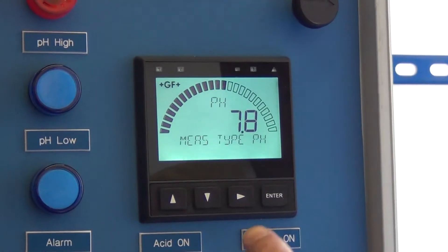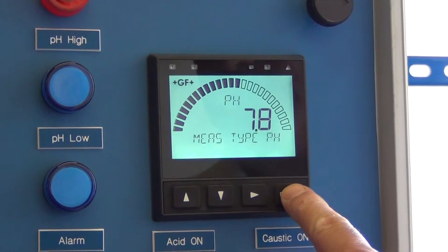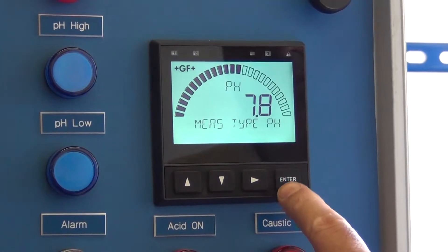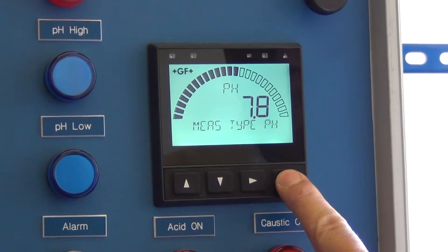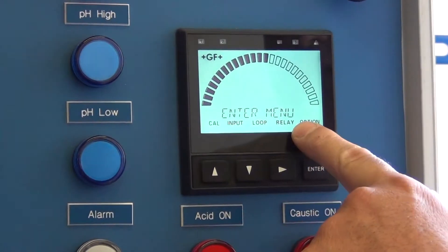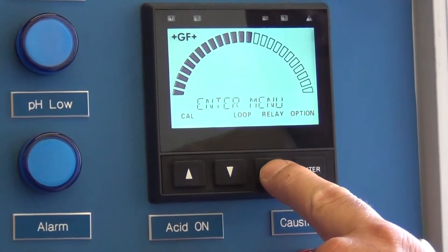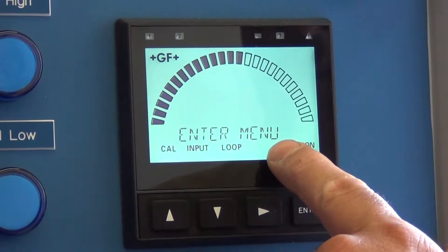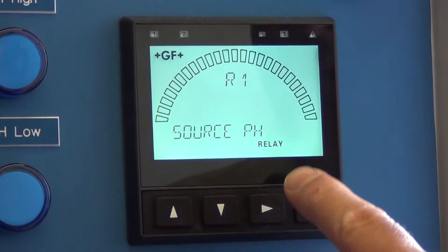Change the pH that your acid pump will dose at. If you're at the main screen, press and hold enter for a couple of seconds. We need to get to the relay menu. Go to relay, hit enter.